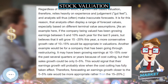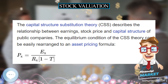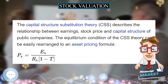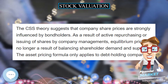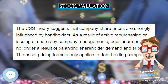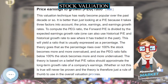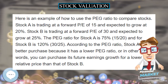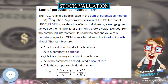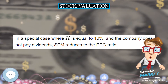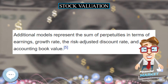It is for this reason that analysts often model a range of forecast values. As an example, if the company being valued has been growing earnings between 5 and 10% each year for the last 5 years, but believes that it will grow 15-20% this year, a more conservative growth rate of 10-15% would be appropriate in valuations. Another example would be for a company that has been going through restructuring — it may have been growing earnings at 10-15% over the past several quarters or years because of cost cutting, but their sales growth could be only 0-5%. This would signal that their earnings growth will probably slow when the cost cutting has fully taken effect. Therefore, forecasting an earnings growth closer to the 0-5% rate would be more appropriate rather than 15-20%.